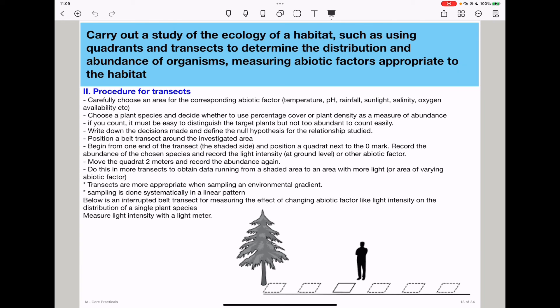So this brings us to the end of this description of the experiment for using quadrats as well as transects in measuring the abundance and distribution of organisms while varying specific abiotic factors. Thank you for being with us. Do not forget to subscribe. See you in the next video. Bye-bye.